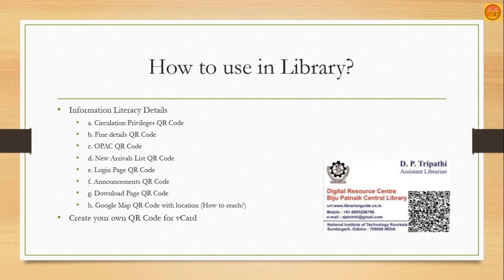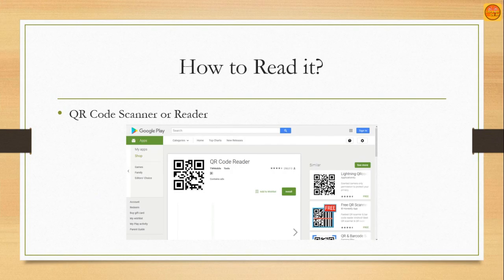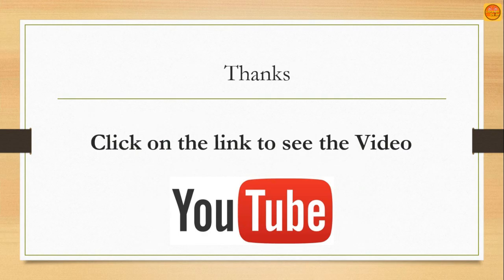These are the different ways in which the library can make use of QR codes to promote library services for the benefit of users. As for how to read them, there are many QR code readers and scanners available online which can be downloaded and installed on Android smartphones to read QR codes and display the information on the mobile. Thanks for watching this video. In the next video we are going to discuss many more things, so keep watching, and if you wish to stay updated, please subscribe to the channel.